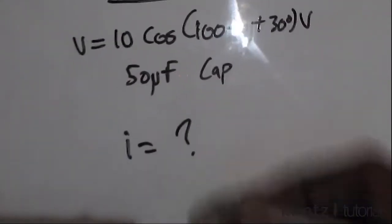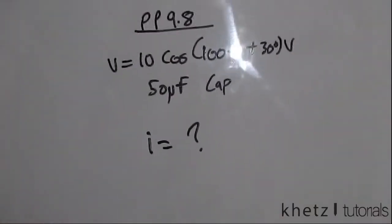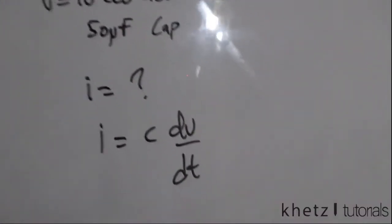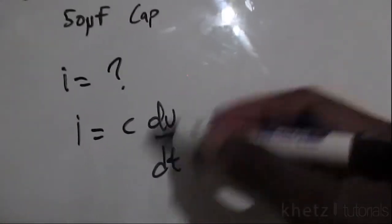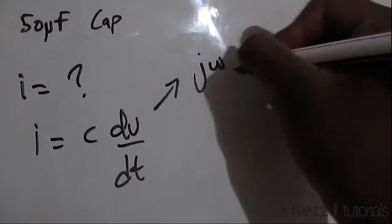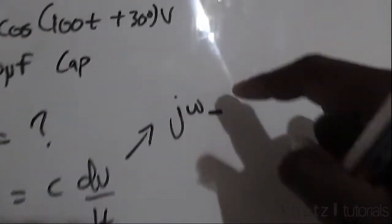For a capacitor, you know that i equals c dv divided by dt. Differentiation in the complex form results in jω and the variable of interest.